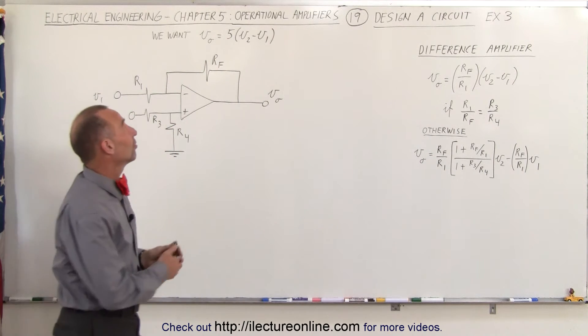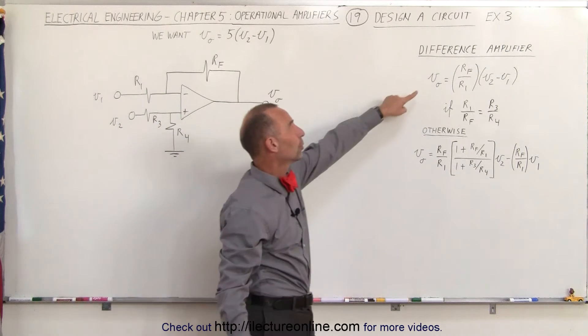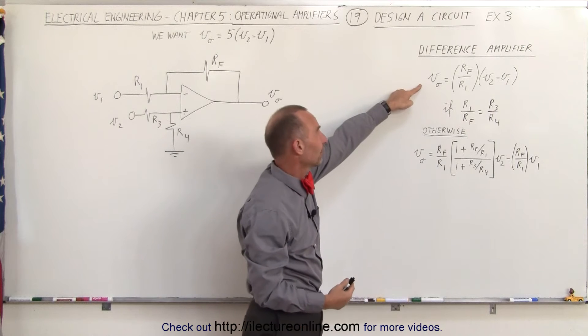In that case, since the coefficient in front of V2 and V1 is the same number, we can go ahead and use the reduced equation for the difference amplifier.